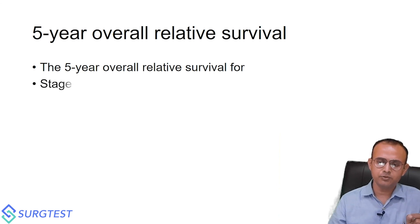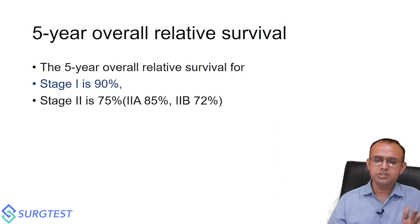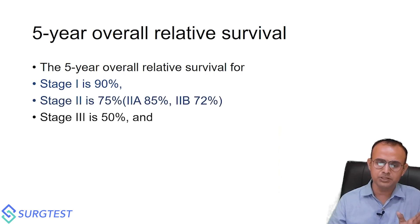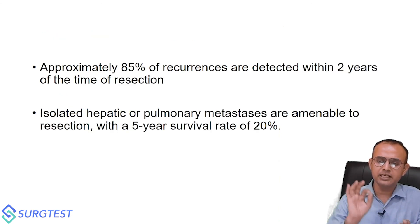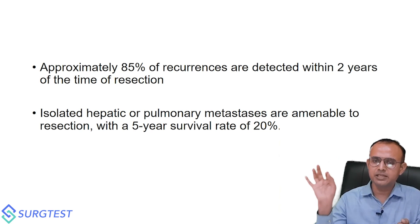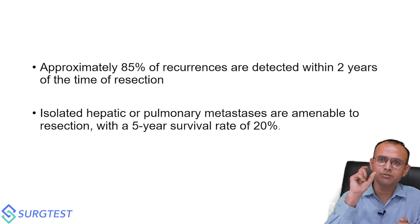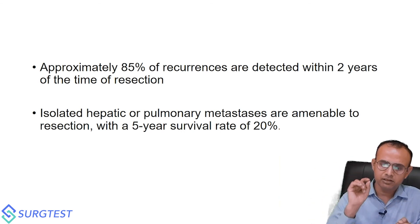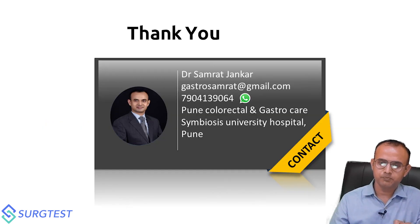Five-year overall survival rates for colon cancer: stage one approximately 90 percent, stage two A approximately 85 percent, stage two B approximately 75 percent, stage three approximately 50 percent, and stage four approximately 5 percent. Approximately 85 percent of recurrences occur within two years of resection, so intensive surveillance is needed during that period. For isolated hepatic metastasis amenable to resection, the survival rate is approximately 20 percent.